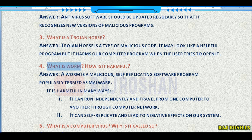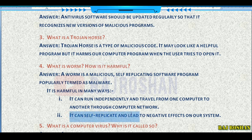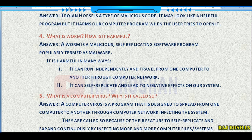What is a worm and how is it harmful? A worm is a malicious self-replicating software program, popularly termed as malware. It can run independently and travel from one computer to another through a computer network, and it can self-replicate, leading to negative effects on our system.